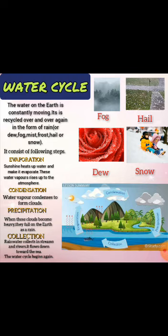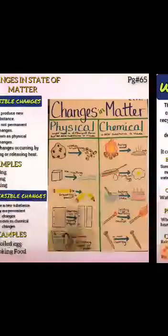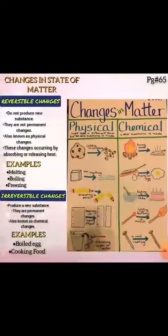The last step is collection. The rainwater falls on mountains, ground, rivers, and streams. All this water flows toward the sea again and the water cycle begins again.